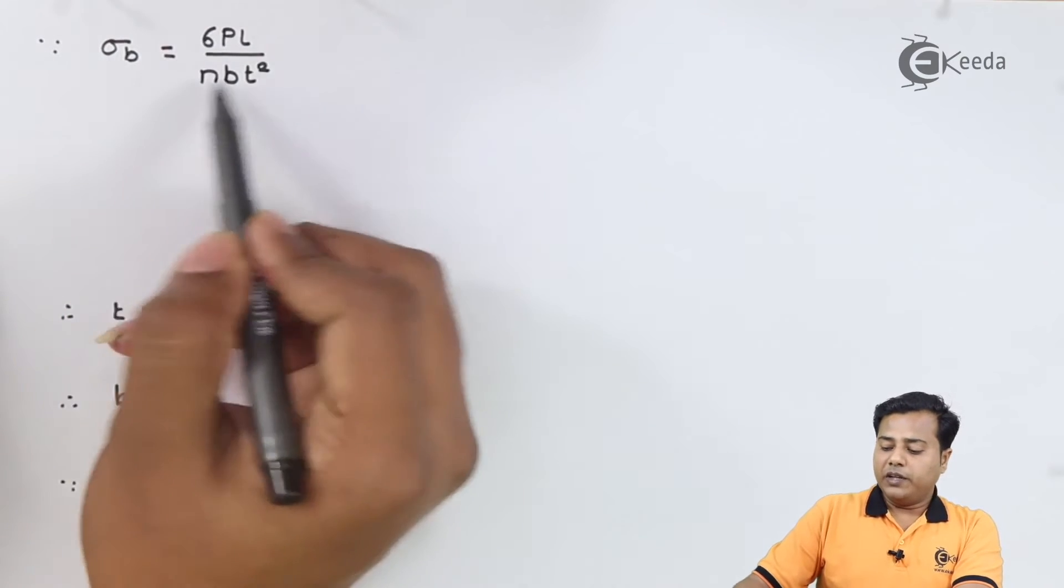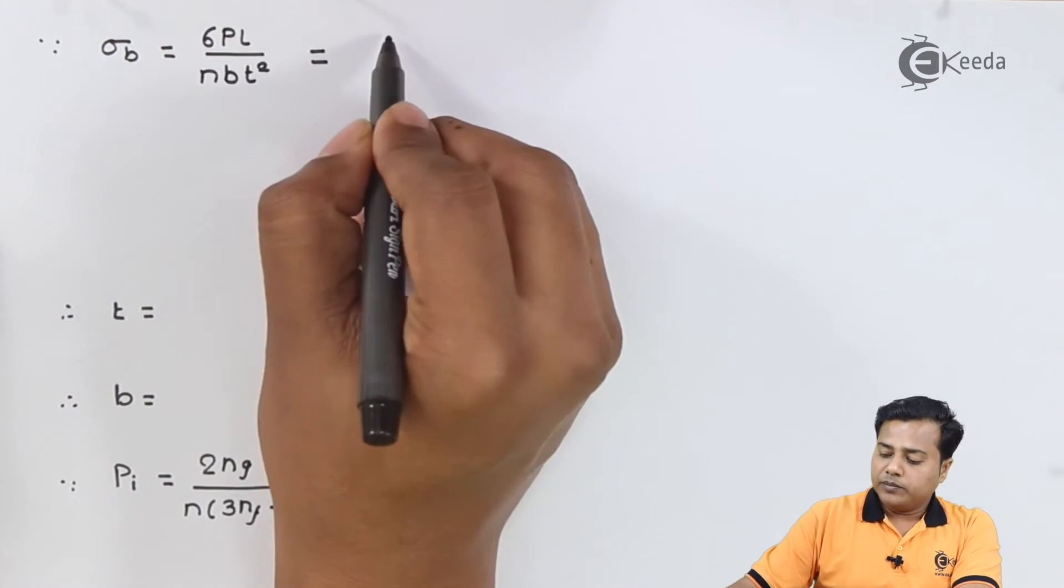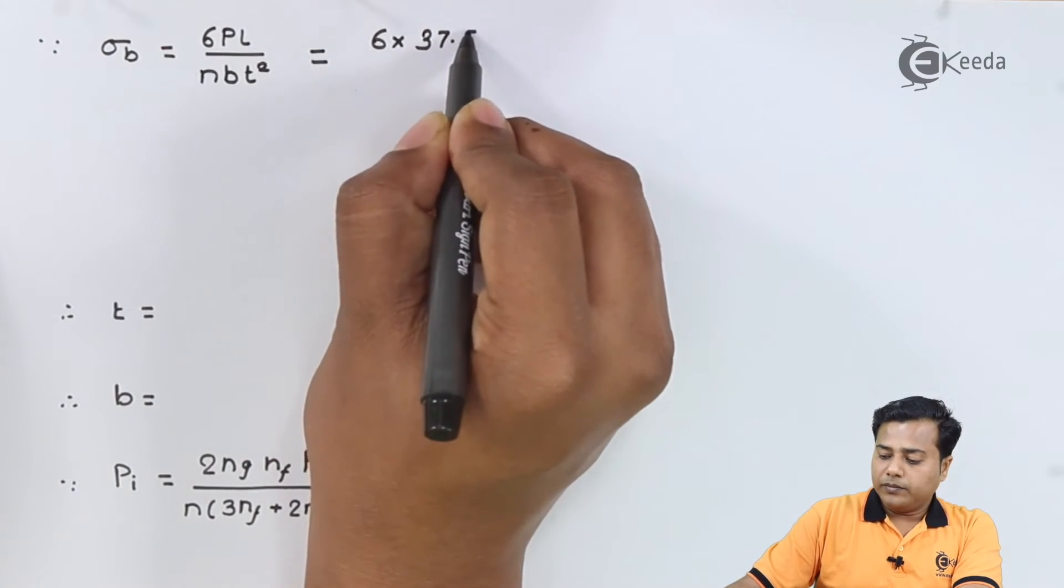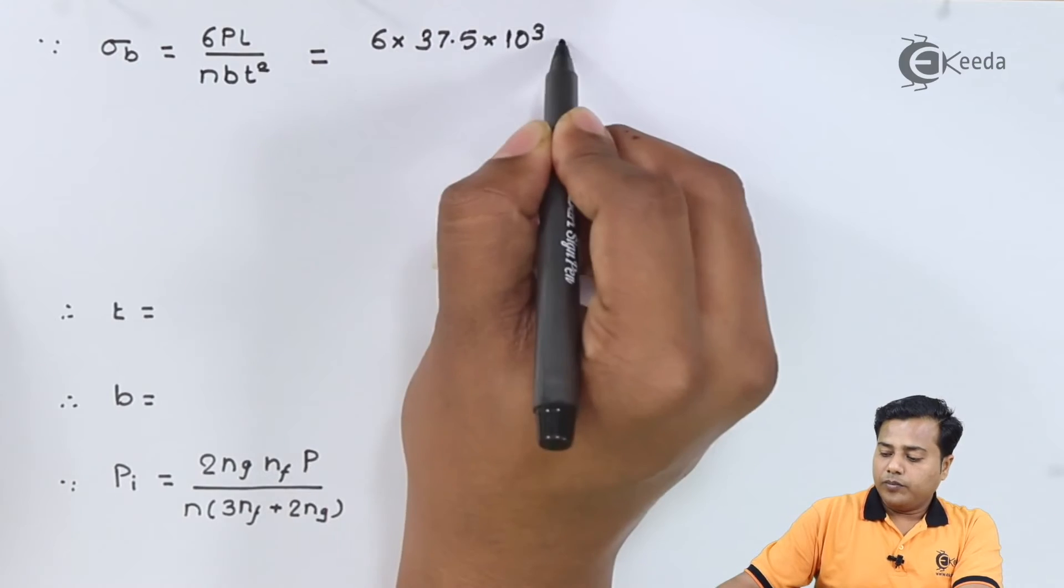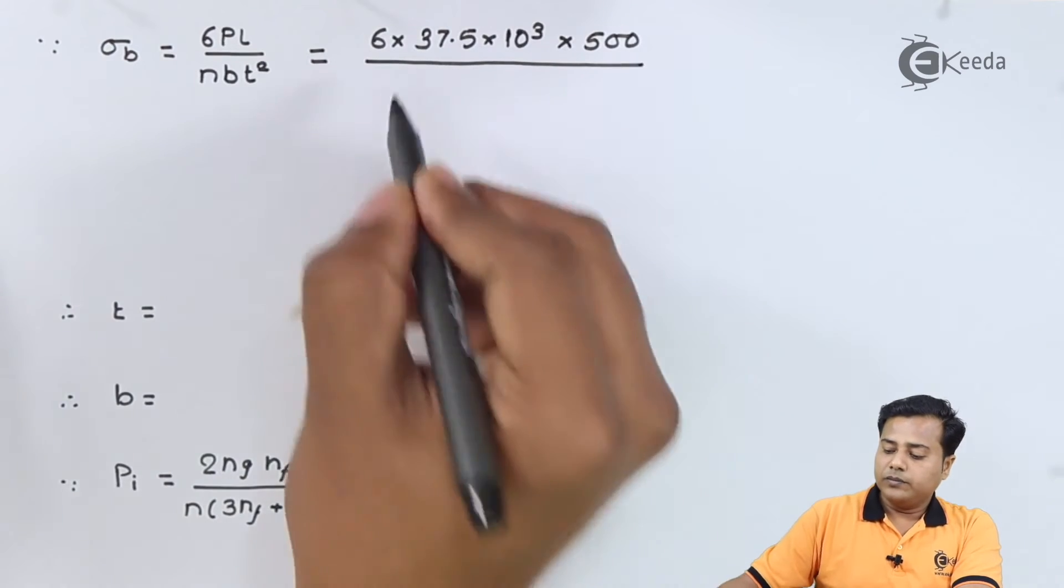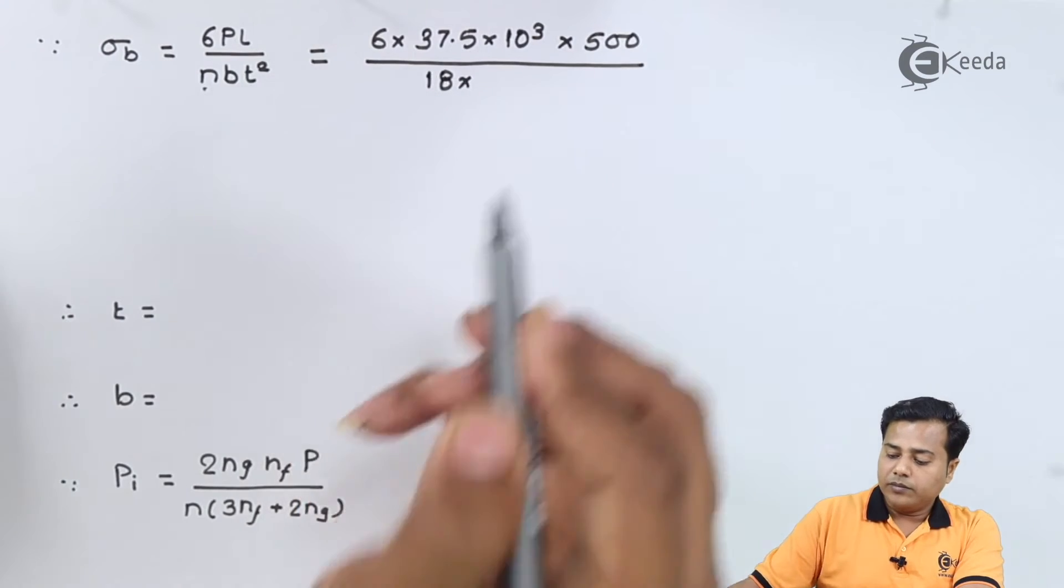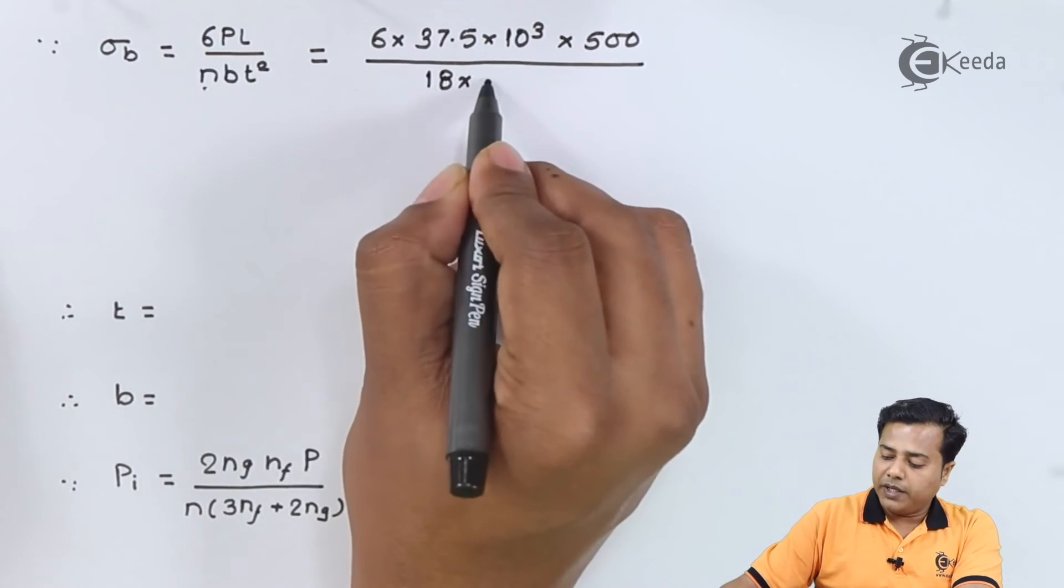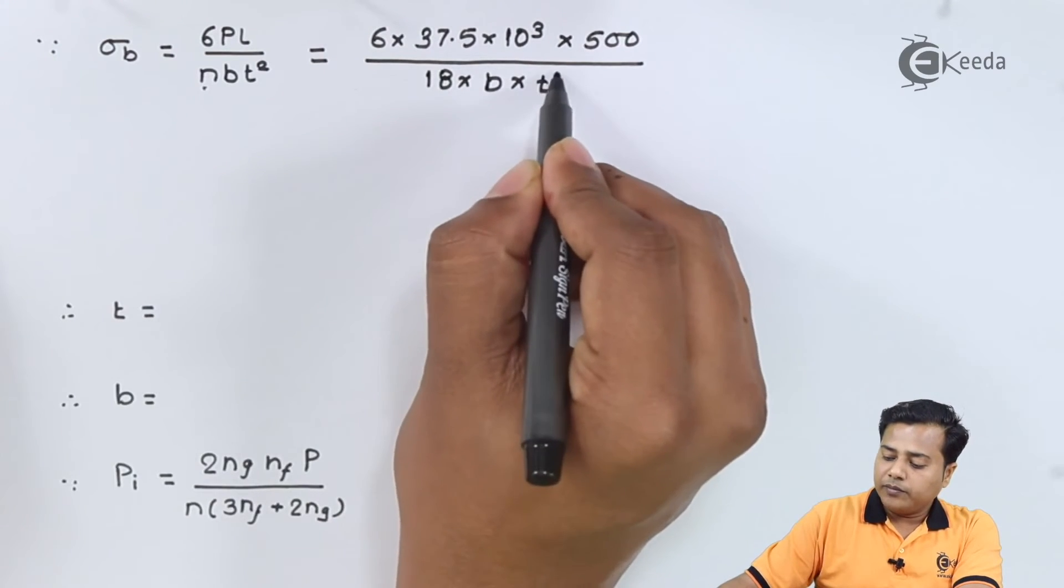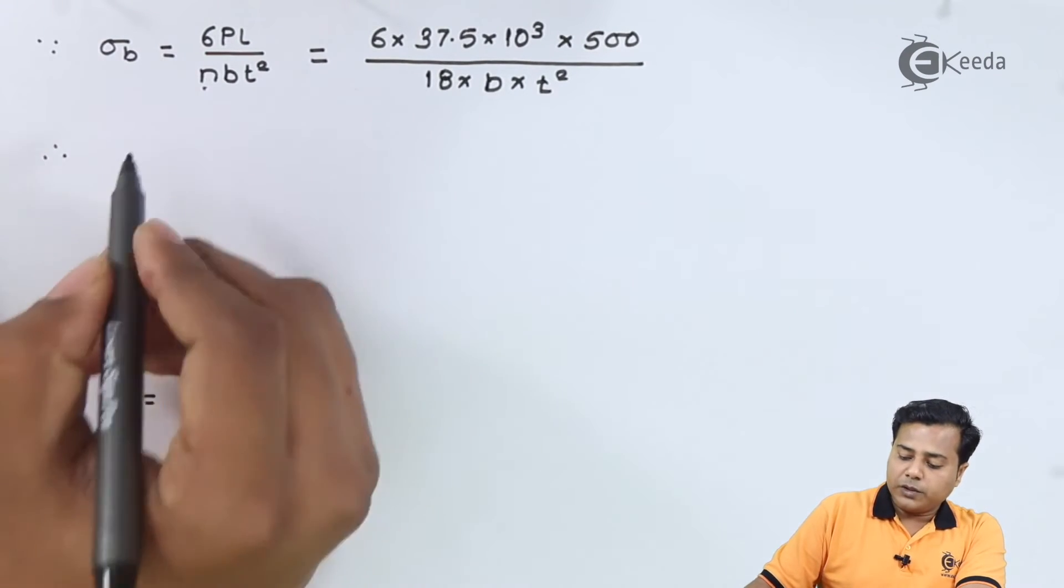We already know an empirical relation and we can find this in the PSG data book. We substitute the values: 6 × 37.5 × 10³ × 500 divided by 18 × b × t². We already have been given the maximum value of stress and therefore let us substitute the value.